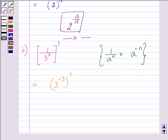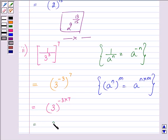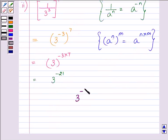And then one of the properties says a to the power n to the power m can be written as a to the power n multiplied by m. That means the exponents will get multiplied with each other. So using this property, we can write 3 raised to the power minus 3 multiplied by 7, which makes it 3 raised to the power minus 21. So this is the answer of our second part.